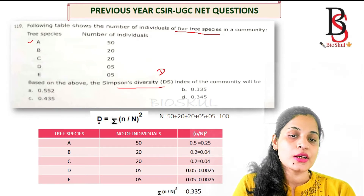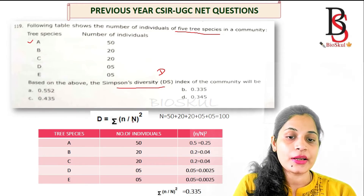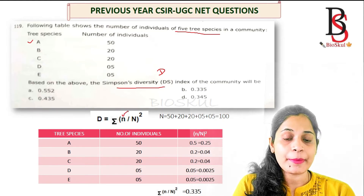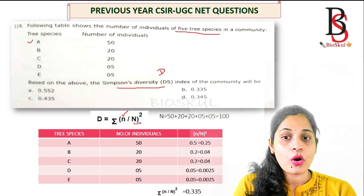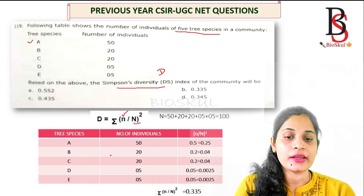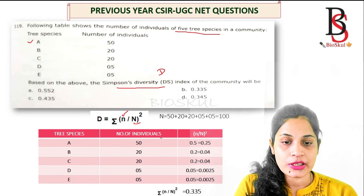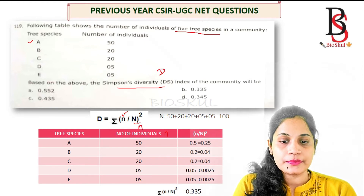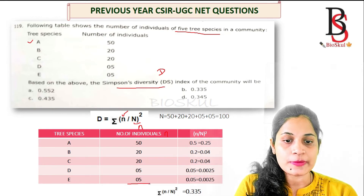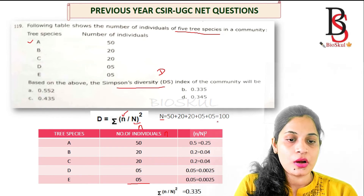Using the formula D = Σ(n/N)², small n is the number of individuals of each species and capital N is the total number of individuals of all species. The five tree species are A, B, C, D, and E. Capital N = 50 + 20 + 20 + 5 + 5 = 100.